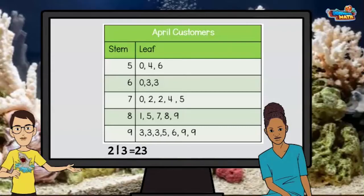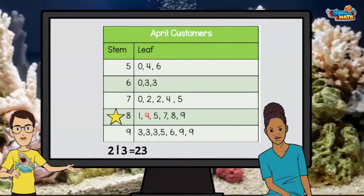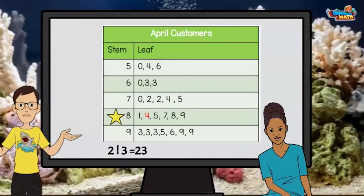Let's add more data to the chart. Yesterday 84 customers came in and I need to add it to the chart. I look in the stem column for 8 and in the leaf column I will put a 4. This equals 84.